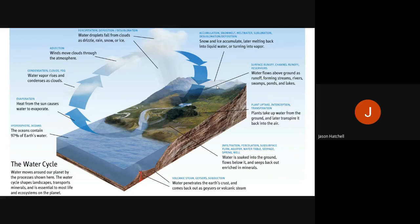Several processes take place as water moves across the landscape: surface runoff, channel runoff, and reservoir storage both natural and human-made. Because of plants, soil and trees, plant uptake, absorption, infiltration and interception also take place. Water is taken up by plants through stomata and roots. Infiltration occurs where water soaks into the ground and seeps down towards the bedrock.